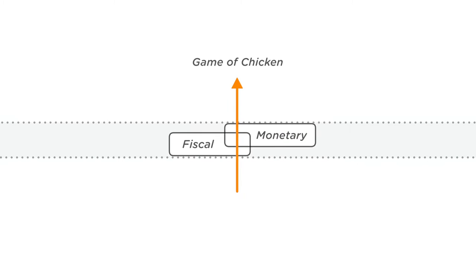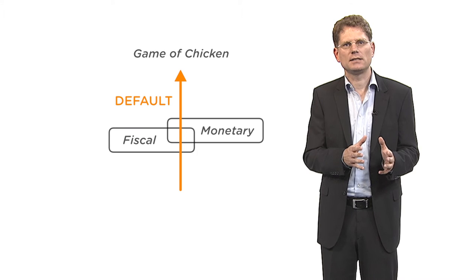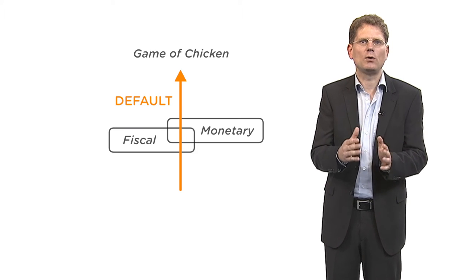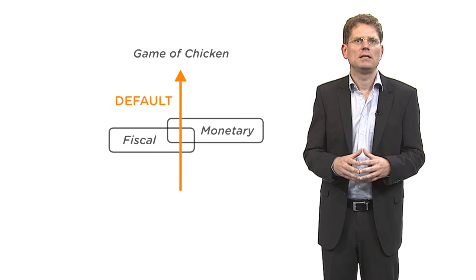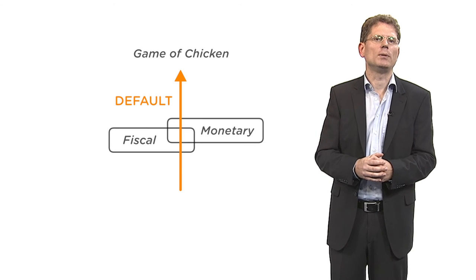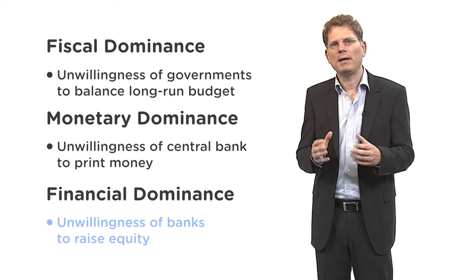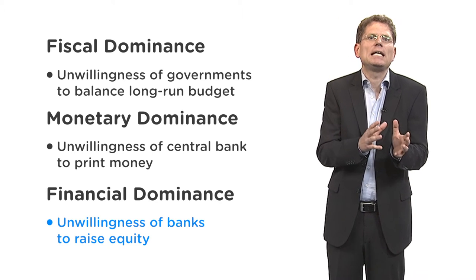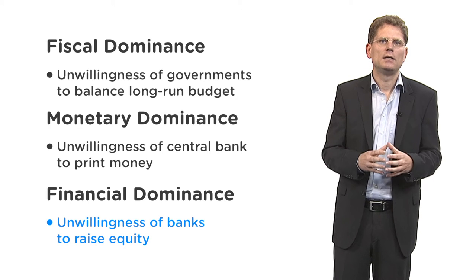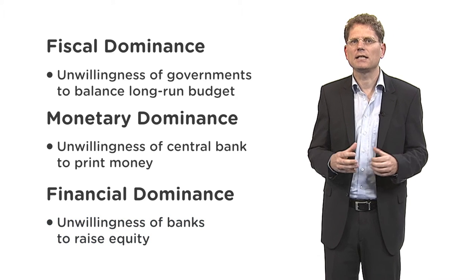If both fiscal authorities and the central bank insist on their dominance, then a default of government debt cannot be ruled out — for example, if part of the debt is inflation indexed, foreign currency denominated, or the country is a member of a currency union. The question then arises whether the banking sector, which holds some of the long-term bonds, has enough equity to absorb losses from a government bond default. Under financial dominance, banks are unwilling to raise equity or are deliberately undercapitalized, fearing that losses will be pushed onto them. If banks are undercapitalized, a default of government bonds would cause large contagion and ripple effects to the real economy.